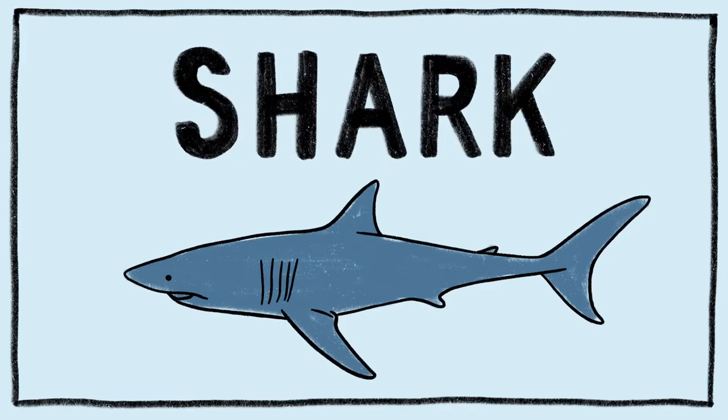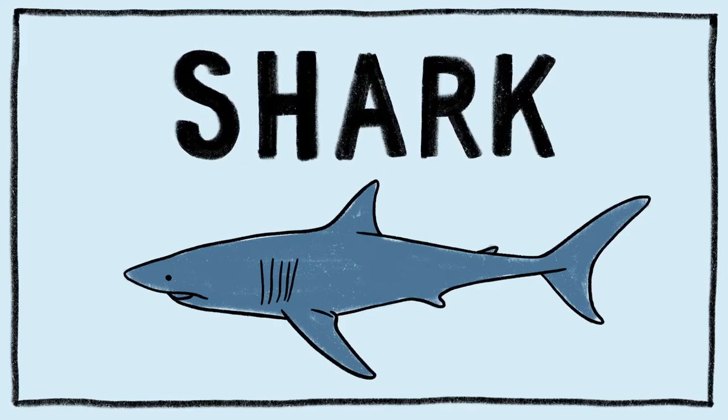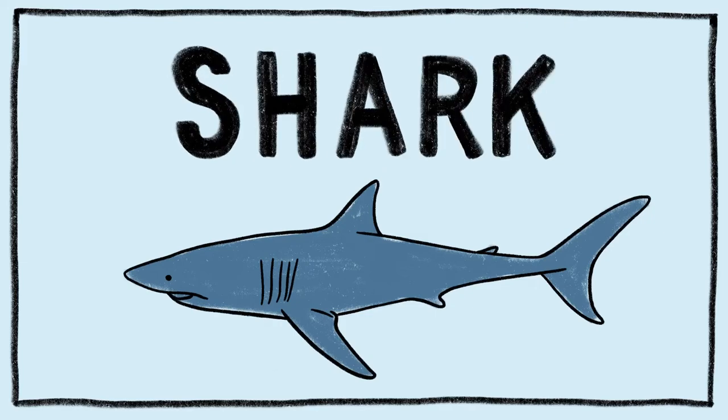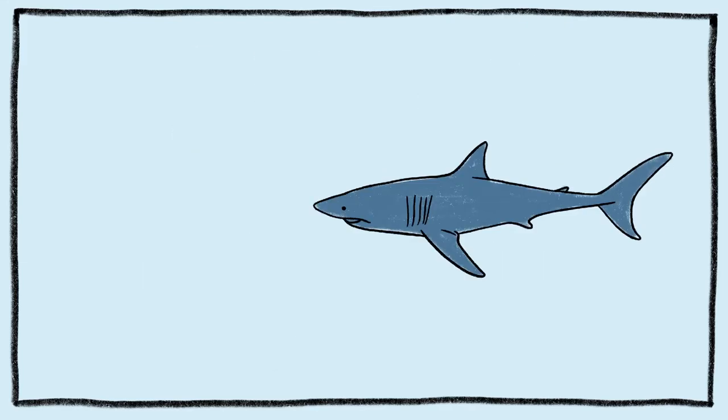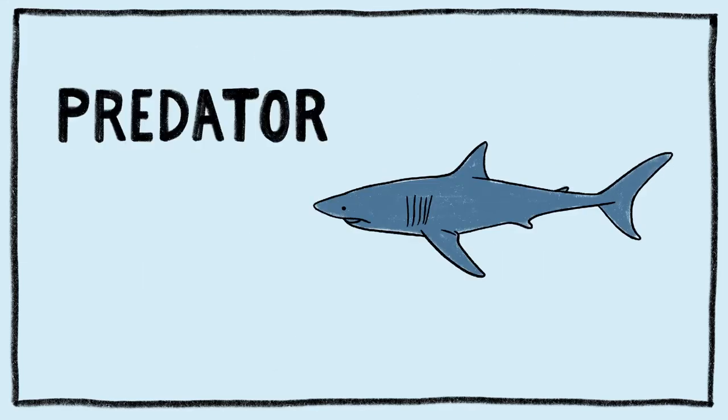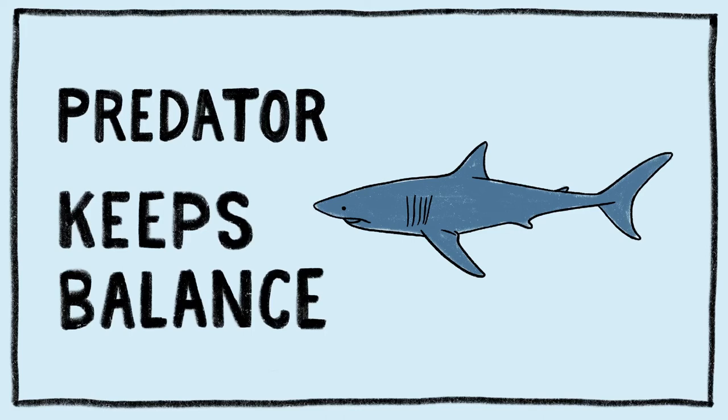A shark is a keystone species. He is in our group of predators and helps keep balance in our ecosystem by eating other animals, like fish. He keeps populations under control in our ecosystem.